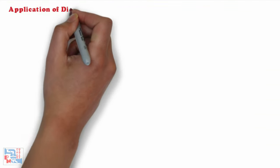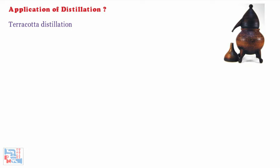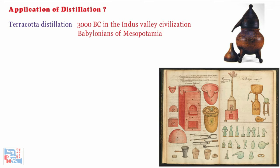Now let's discuss about its application. The earliest known evidence of distillation comes from a terracotta distillation apparatus dating to 3000 BC in the Indus valley civilization. Distillation was known to be used by the Babylonians of Mesopotamia. Initially distillation is believed to have been used to make perfumes. Distillation of alcoholic beverages occurred much later.